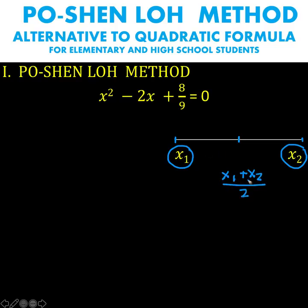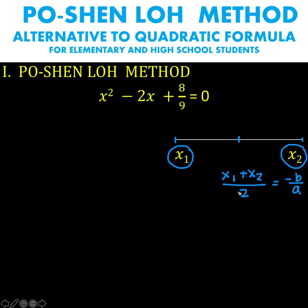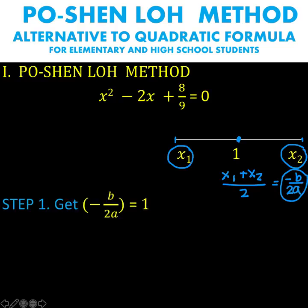We know that the sum of the roots x sub 1 plus x sub 2 is equal to negative b over a. So if we divide it by 2, it's just the same as multiplying by one half. So negative b over a times one half gives us negative b over 2a. Therefore, this midpoint can be calculated by the formula negative b over 2a.